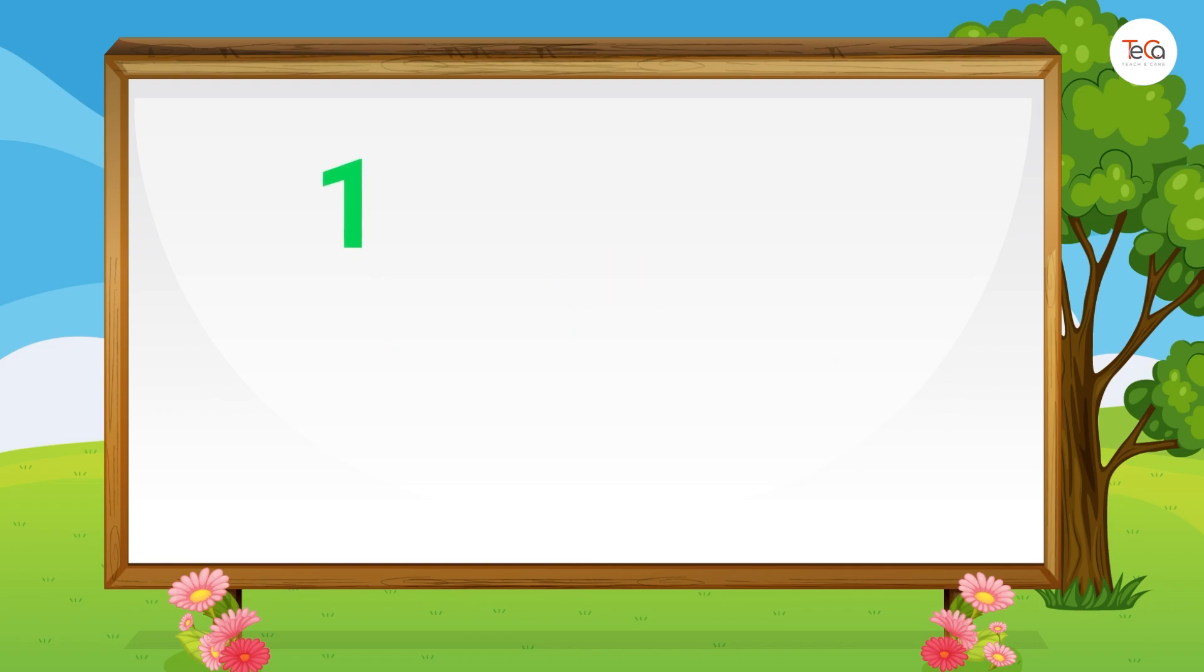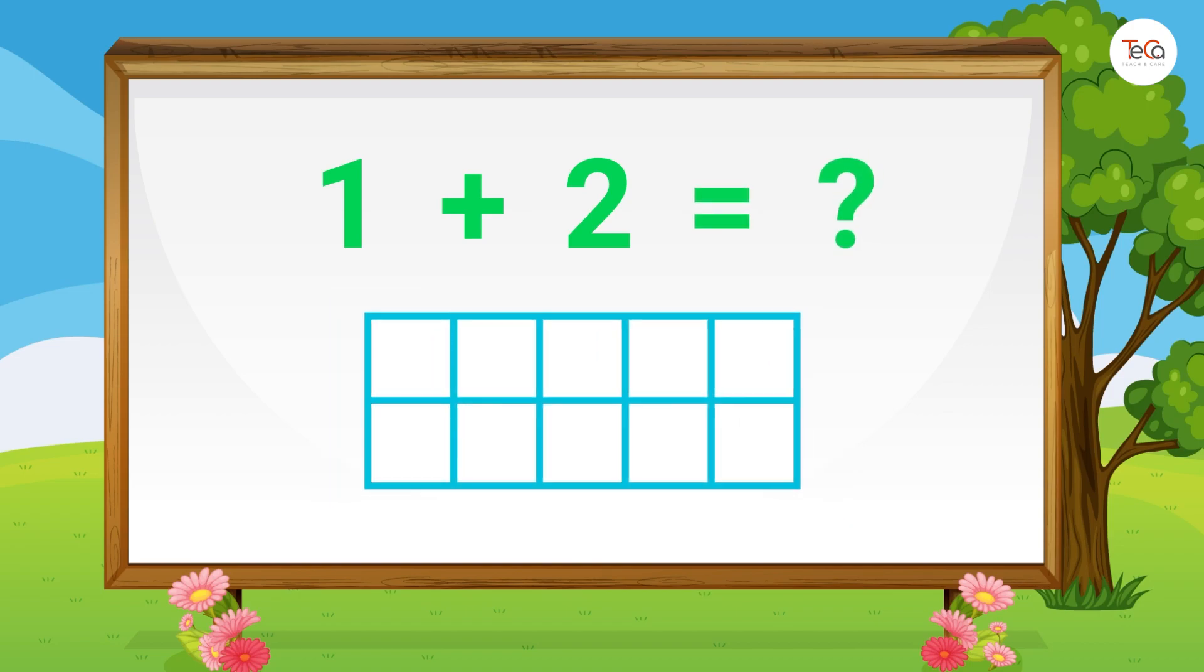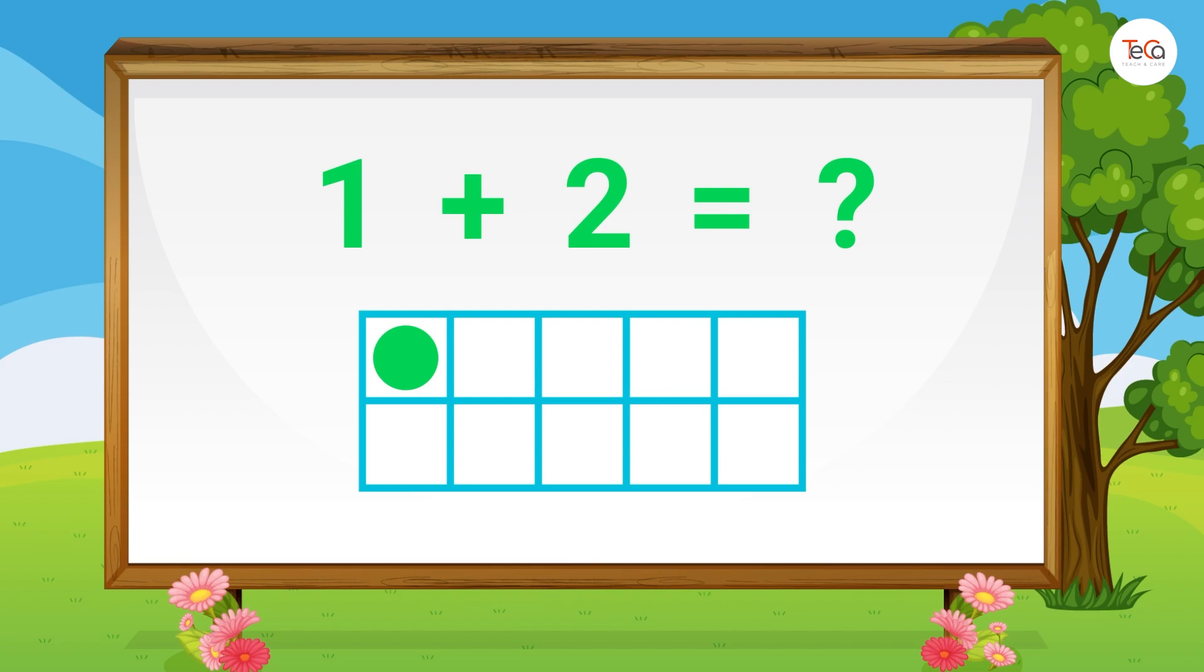First, 1 plus 2 equals... We draw 1 dot then 2 dots. Let's count all the dots to find the sum. Here we have 1, 2, 3. 3 dots in total. So 1 plus 2 equals 3.